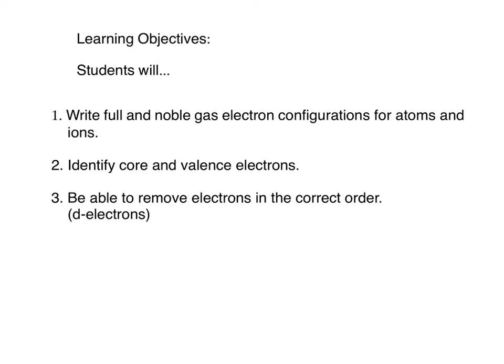After watching this video lecture, students will be able to write full and noble gas electron configurations for atoms and ions. You'll be able to identify core and valence electrons in the noble gas or full electron configurations, and you will be able to remove electrons in the correct order depending on the relative energies of those orbital sub-levels.